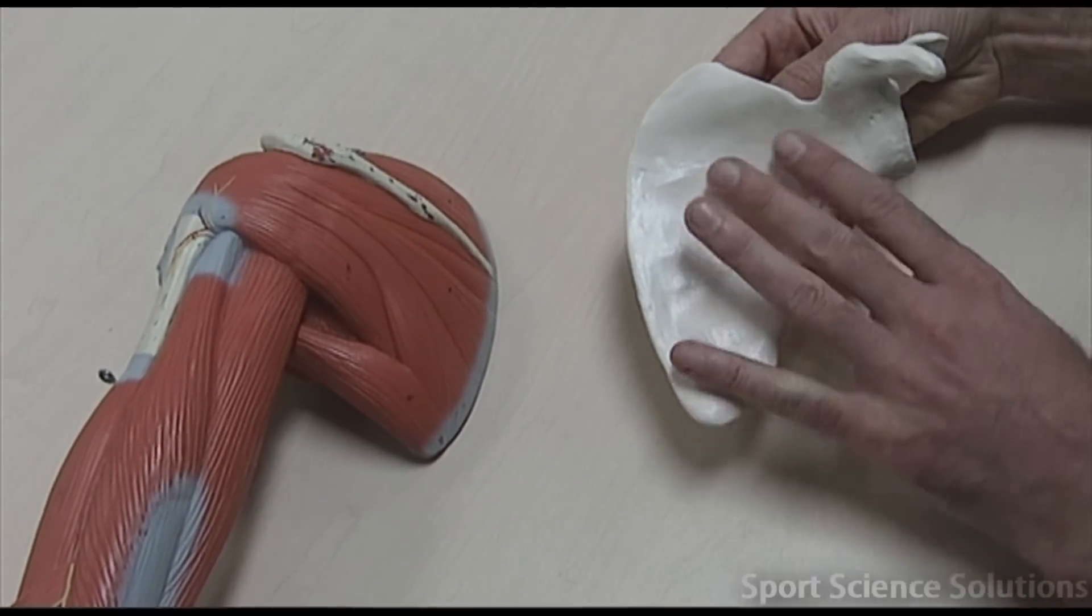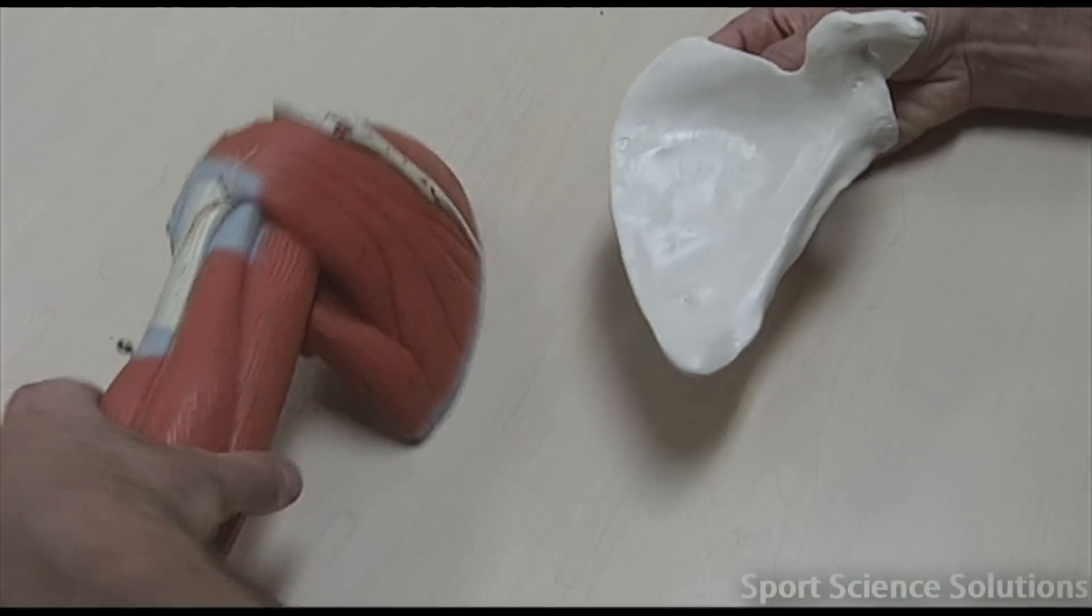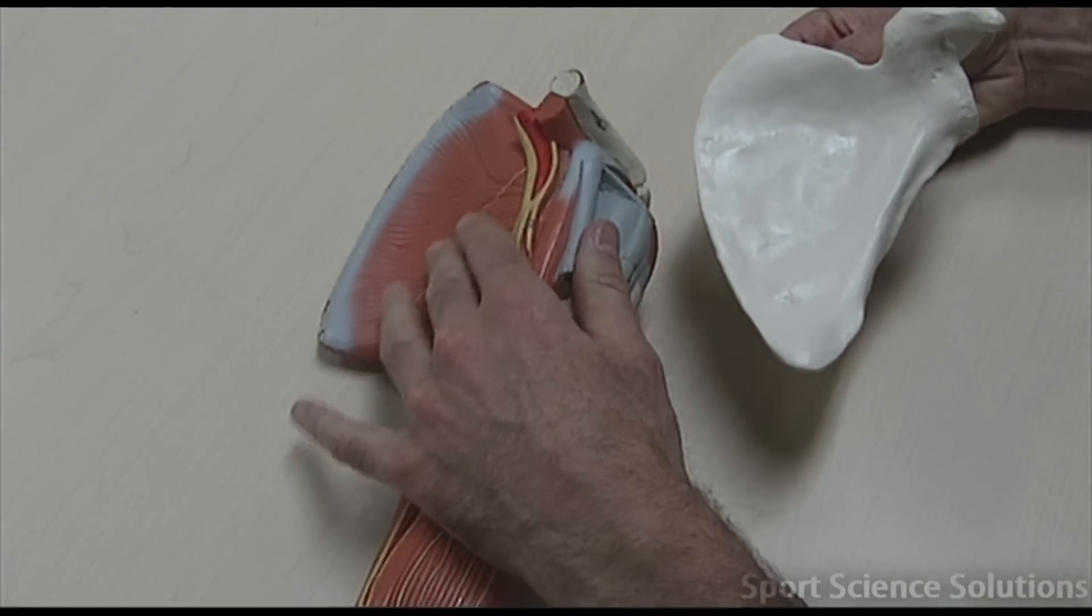Underneath the scapula, we've got the subscapularis fossa, which is the origin for the subscapularis muscle.